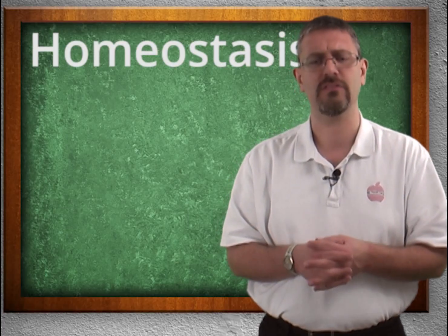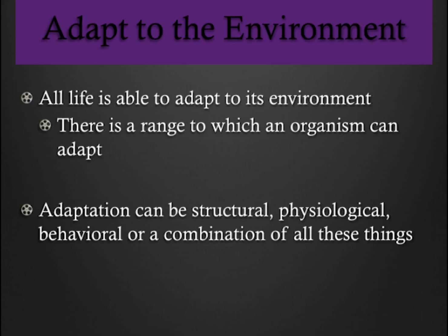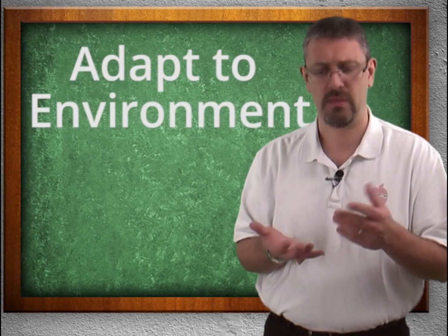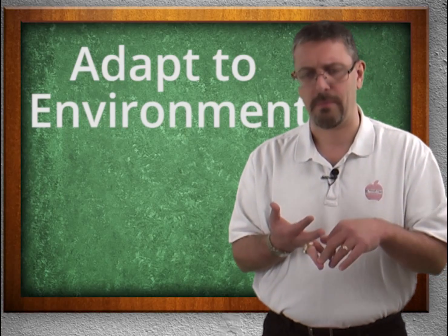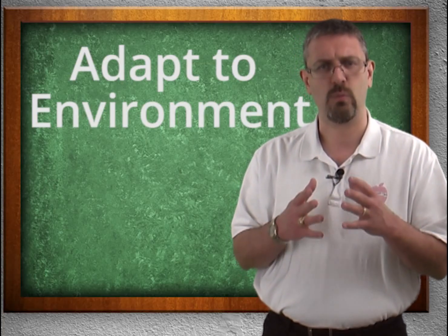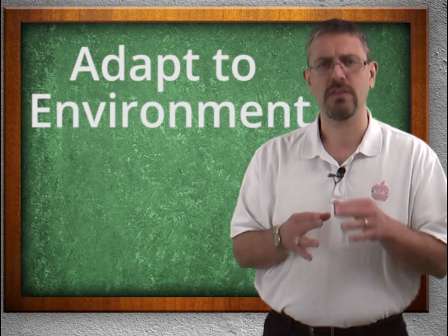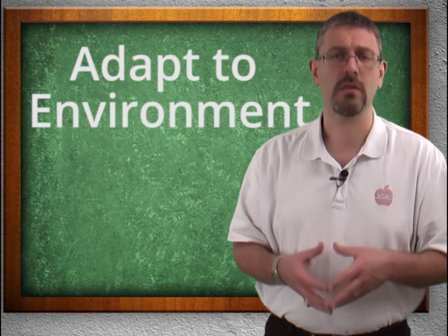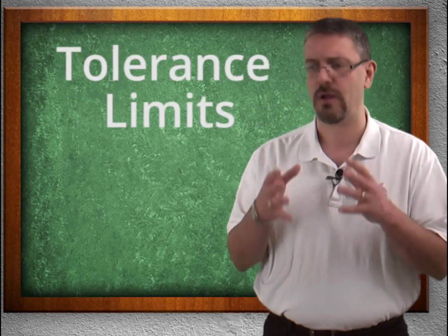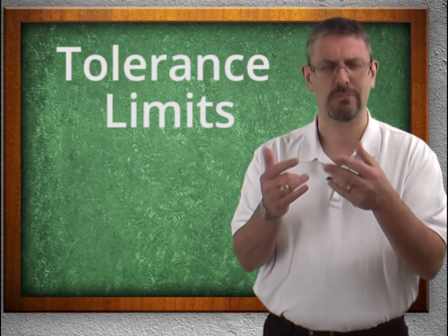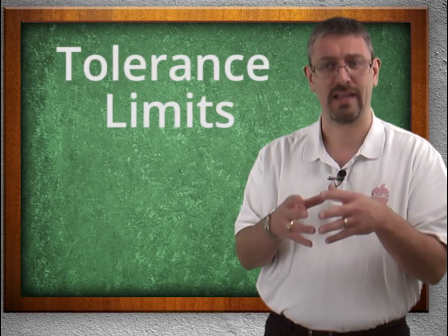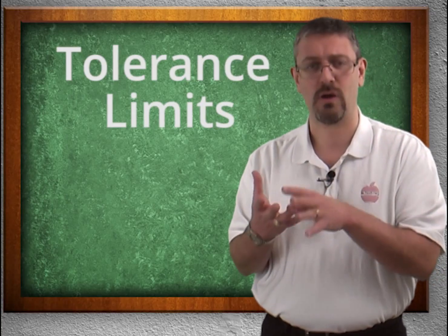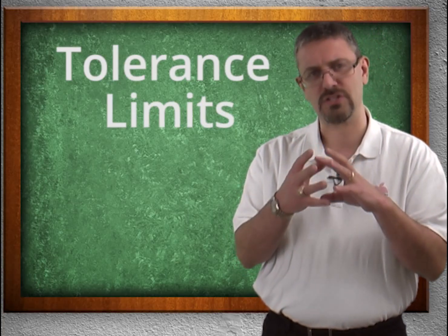The last characteristic that life has in common is the ability to adapt to the environment. This ties in with self-regulating metabolism and irritability. If you are in a cold place, you will act differently than in a hot place. These adaptations can be physiological, environmental, or psychological — things we do to adapt to our environment. However, there is still a limit to how much things can adapt, called the tolerance limit. For example, if you took a freshwater fish and dropped it into a saltwater aquarium, it would have difficulty adapting and would most likely die, and vice versa.